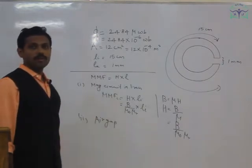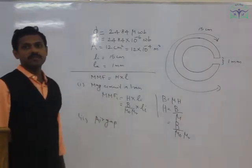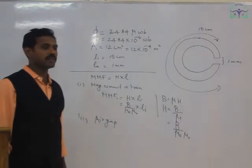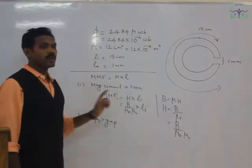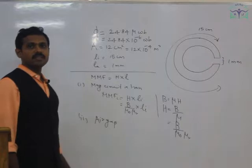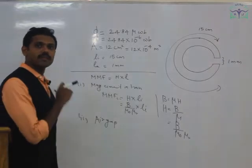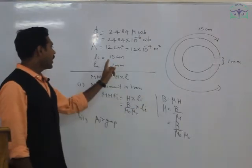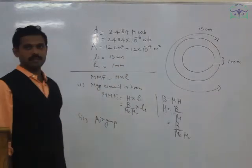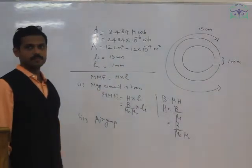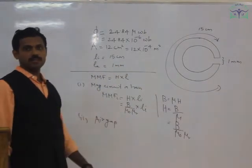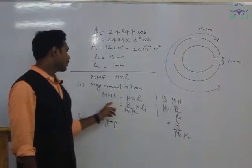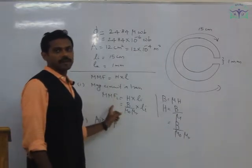µ₀ is the permeability of free space, equal to 4π × 10⁻⁷. µᵣ, the relative permeability, is given as 800. The length of iron Lᵢ is 15 cm. By substituting all these values into the expression for MMF of iron, you will get the answer.